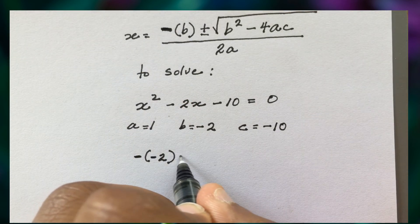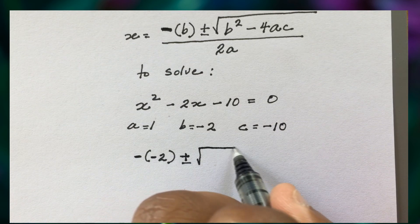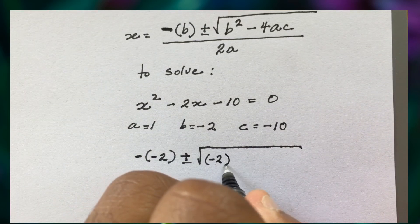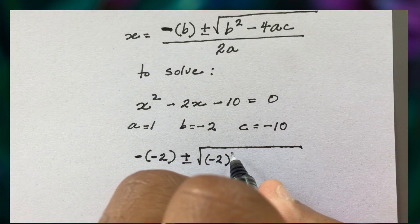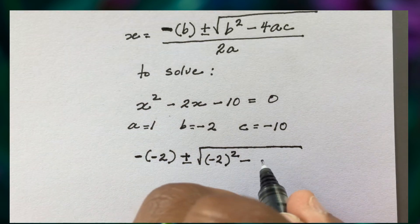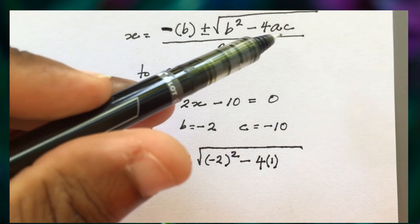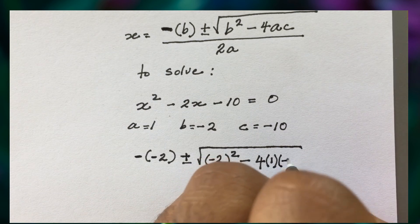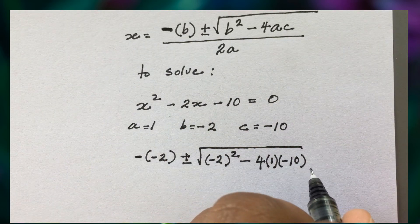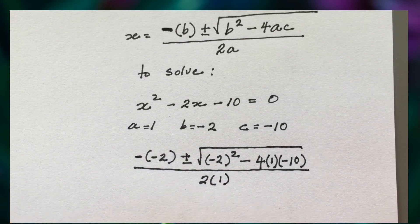Nothing wrong with two negatives beside each other — that's perfectly fine. Then we have plus or minus, followed by a long square root sign. Under the root, we have the b value, negative 2, squared. Following the formula, we subtract 4 times the a value — which is 1 — times the c value, which is negative 10 in brackets. Then all of this is divided by 2 times a, which is 1.